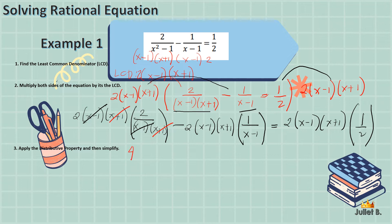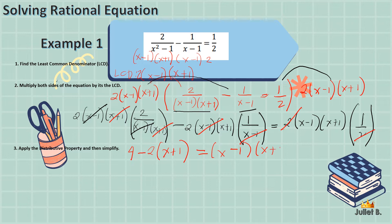Since it's minus, we copy minus. x minus 1 cancels, leaving negative 2 times x plus 1. On the right side, 2 divided by 2 is 1, giving x minus 1 times x plus 1. Simplifying further, we distribute negative 2 to x plus 1 and multiply x minus 1 times x plus 1. So: 4 minus 2x minus 2 equals x squared minus 1. We now have a second-degree equation.